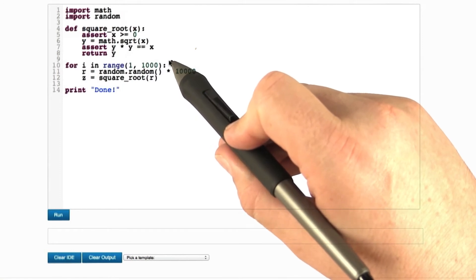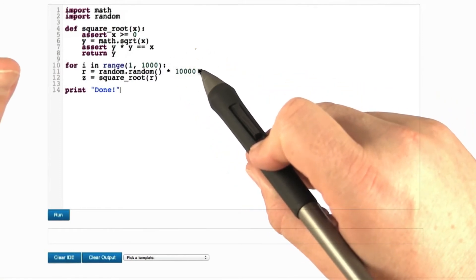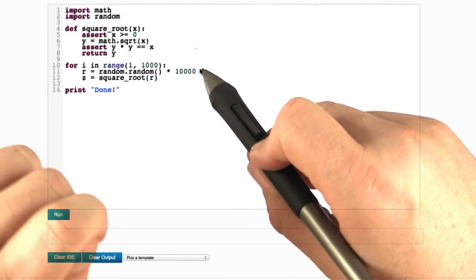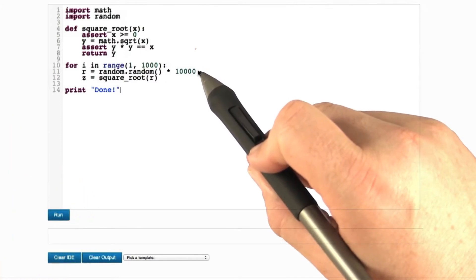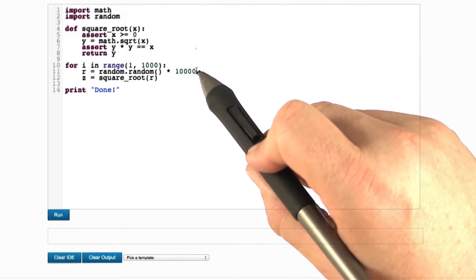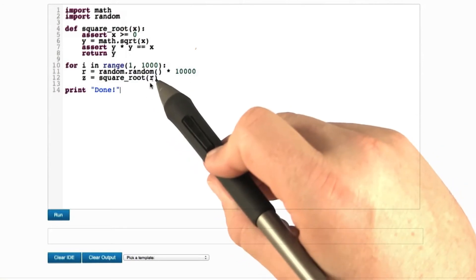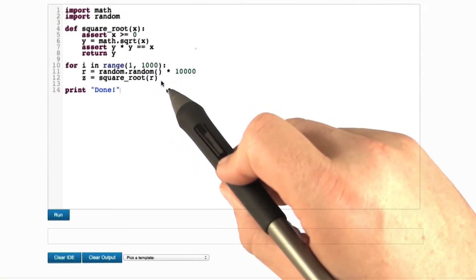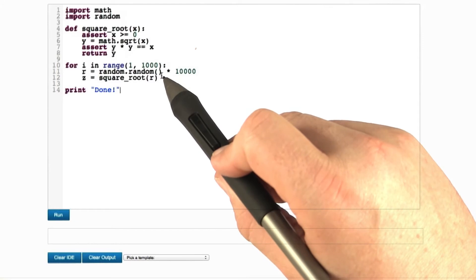Now for the test driver. I've set up a loop with 1,000 iterations, and we generate random numbers in the range of 0 to 9,999.999. This is the random.random function, which returns a value between 0 and 1.